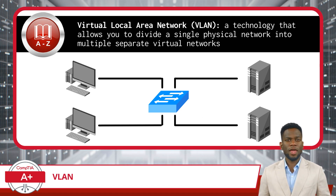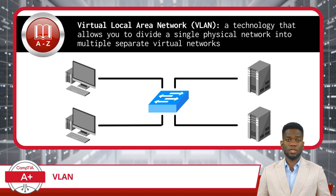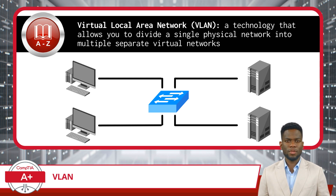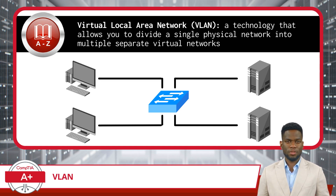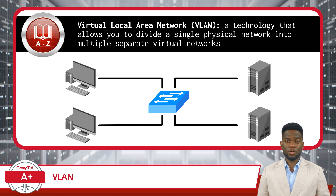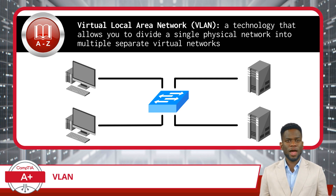Imagine an unmanaged switch as a basic traffic director in a small town, where roads act as network cables that connect buildings symbolizing computers and devices to intersections which behave as switches. In this example, all traffic moves freely, with the switch directing traffic based on the destination address, much like a simple traffic light. This setup works well for smaller networks where the volume of traffic is manageable, and all devices are trusted and secure.